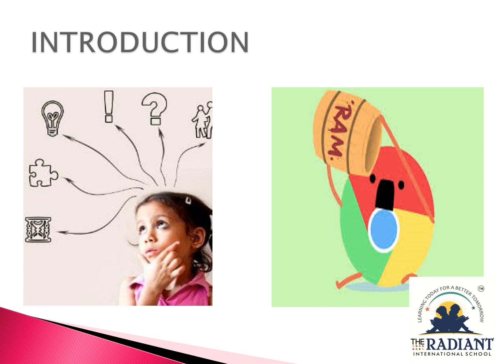Computer cannot think of its own. But still, computer is superior to human beings because of its huge storage capacity. Who is the brain of computer? It is the CPU. CPU is the brain of the computer. CPU controls all the information it receives through the input unit and stores it in memory. Like human beings, computers also have short-term and long-term memory.